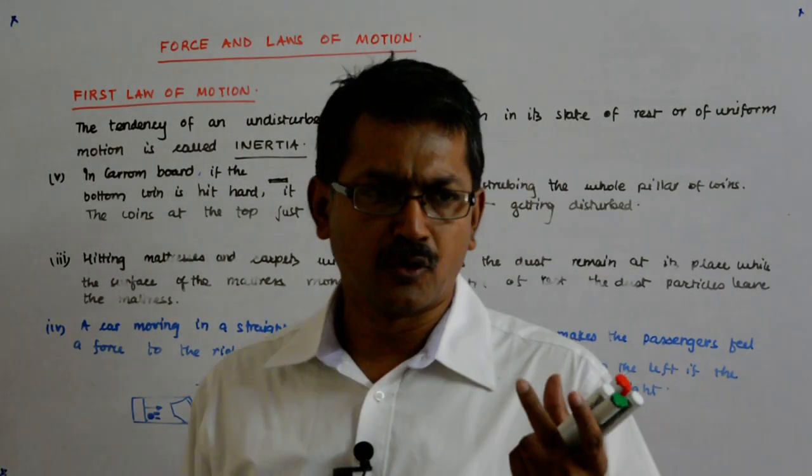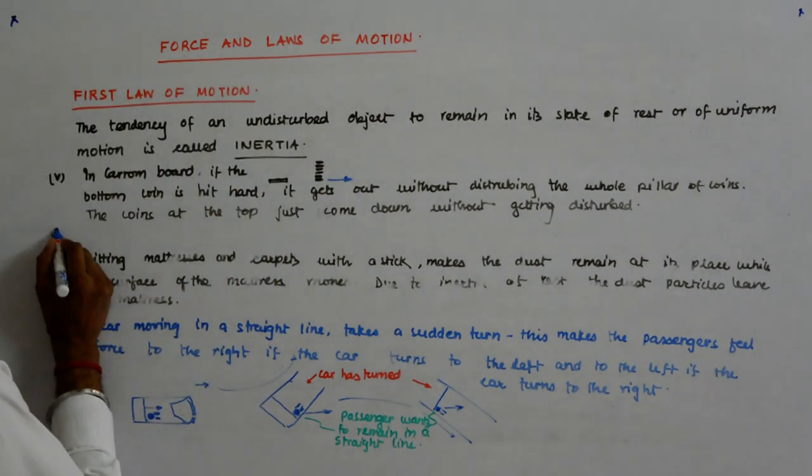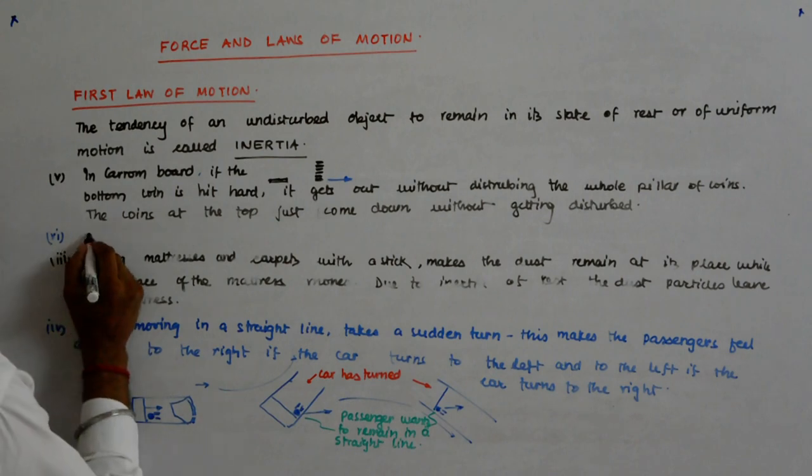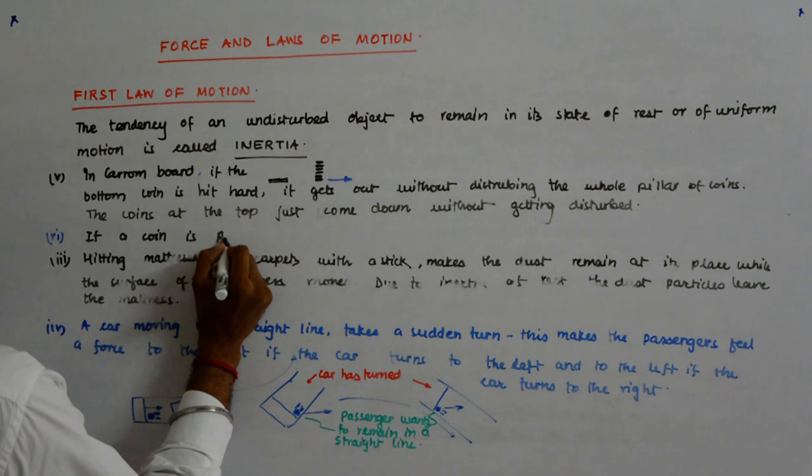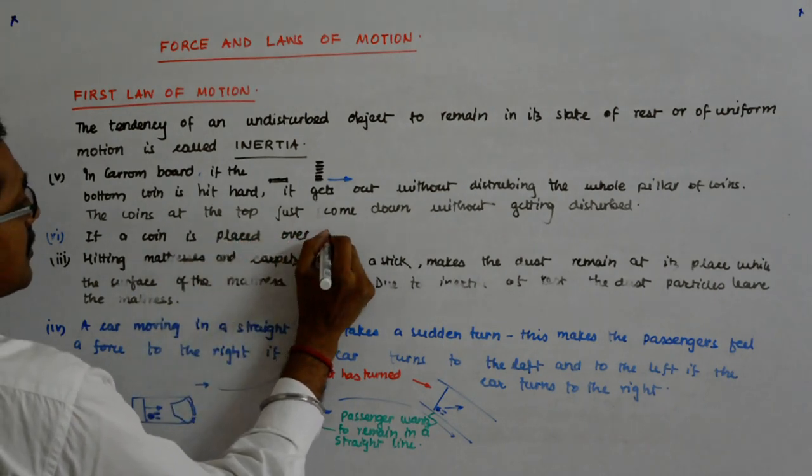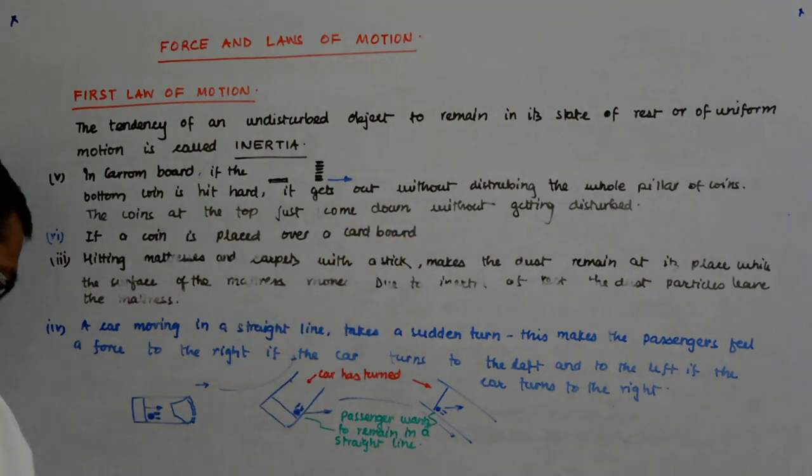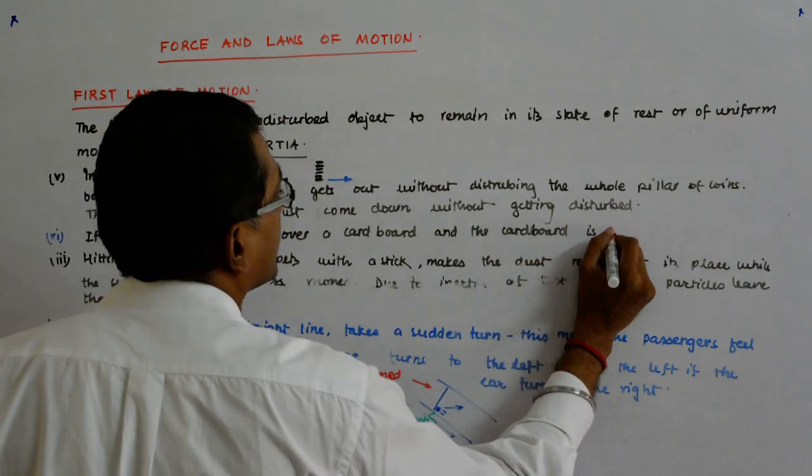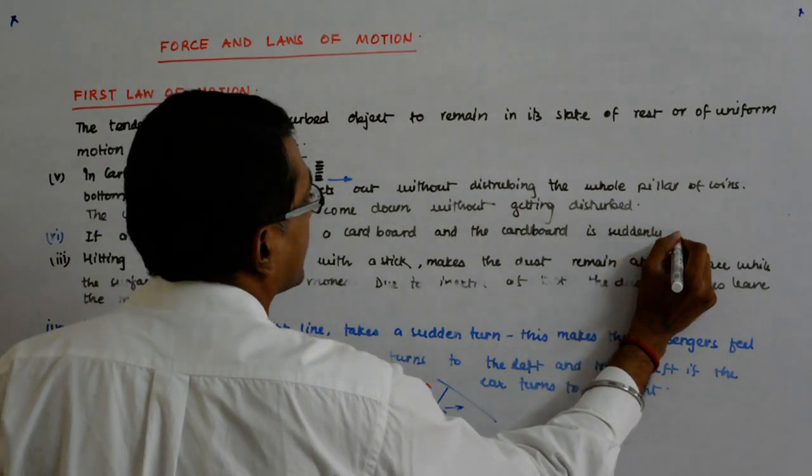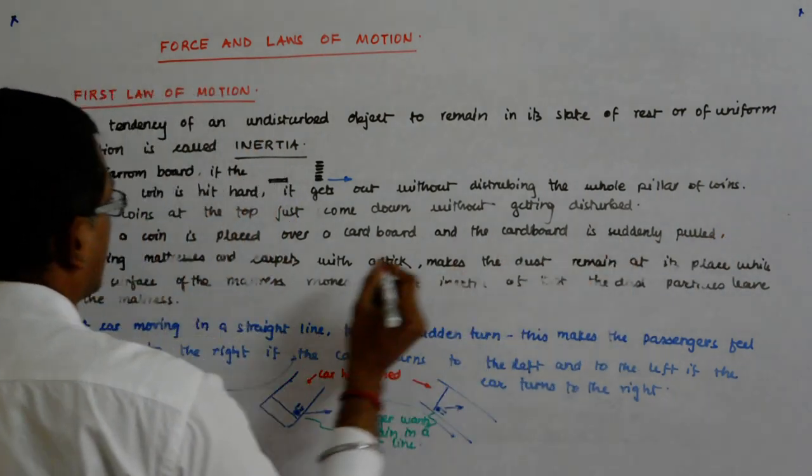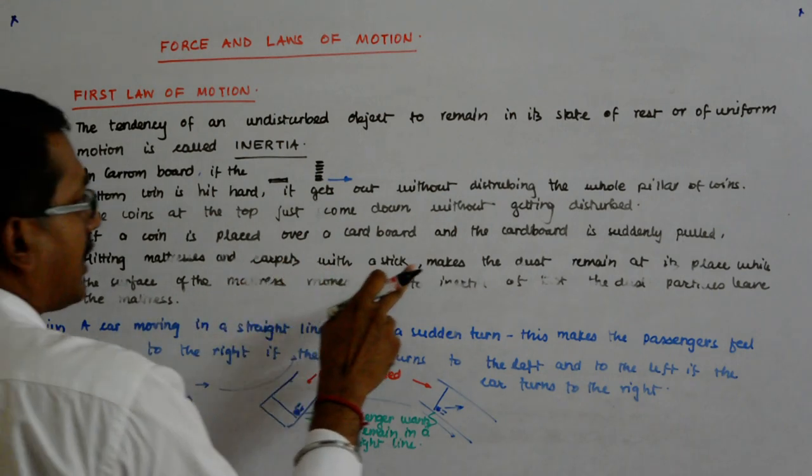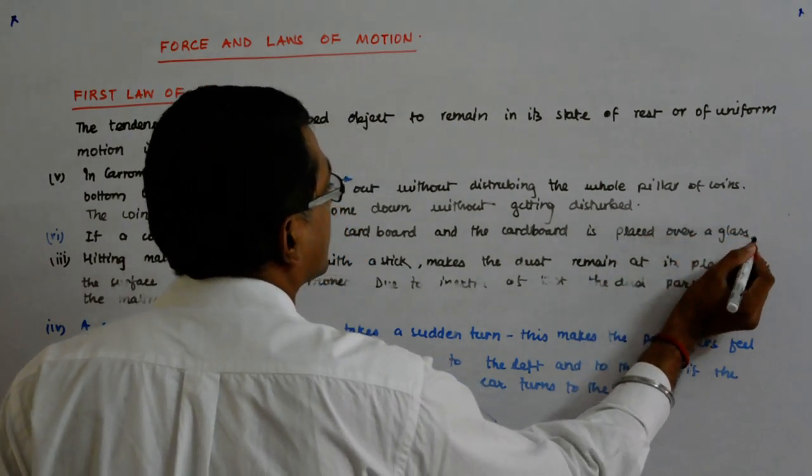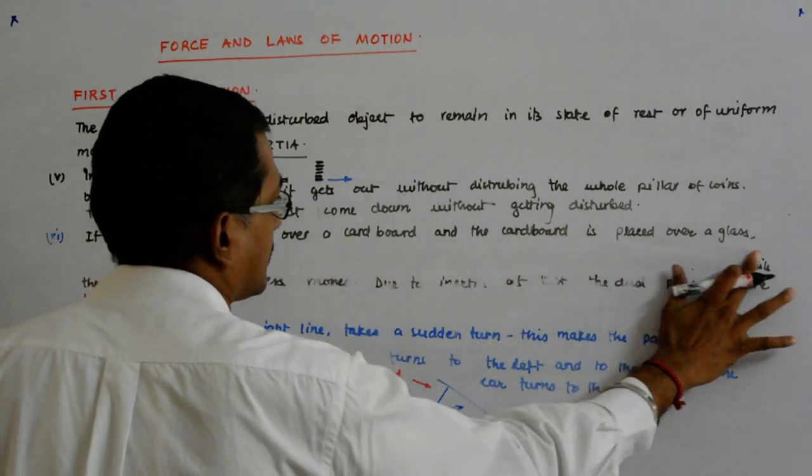So maybe if you put a coin and a hard board, this is also done. So the sixth one is that if a coin is placed over a cardboard, and the cardboard is placed over a glass, then...